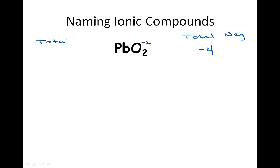This means the total positive charge must be +4. On the periodic table, we see that lead(IV) has a charge of +4, so this compound is lead(IV) oxide.